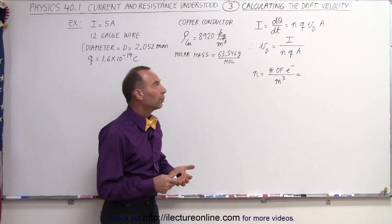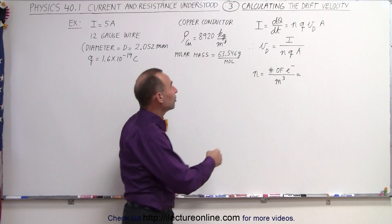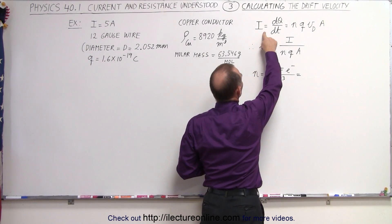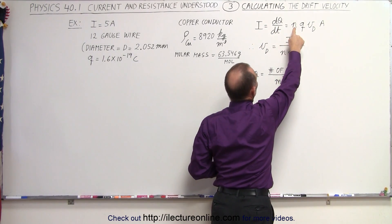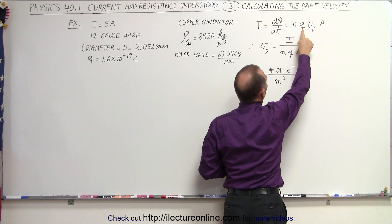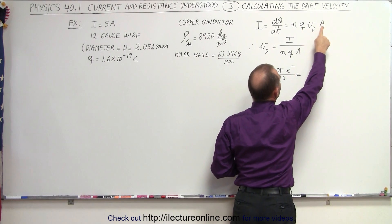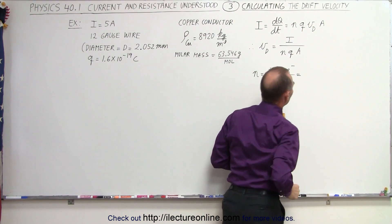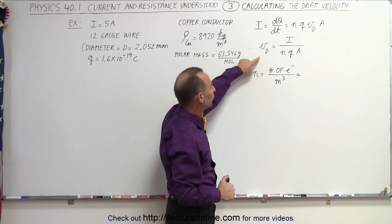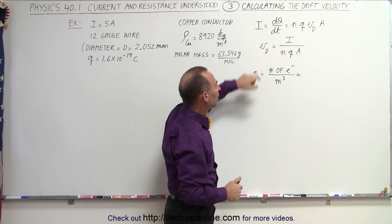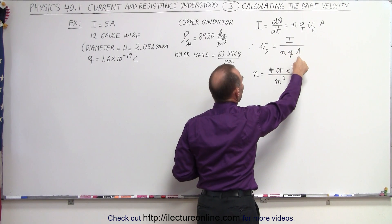Here we have the equation from the previous video: the current, which is equal to dQ/dt, is equal to the number of carriers per unit volume, times the charge on each carrier, times the drift velocity, times the cross-sectional area of the wire. If we solve that equation for the drift velocity, it is equal to the current divided by N, Q, and A.